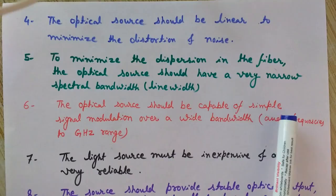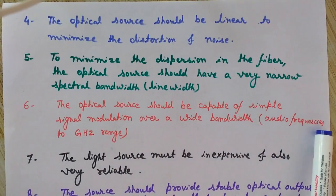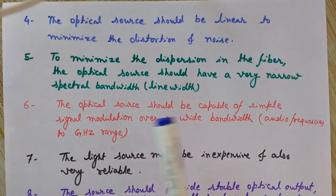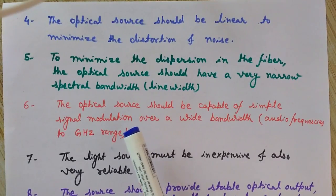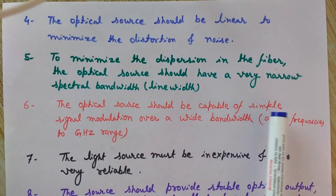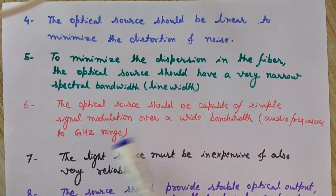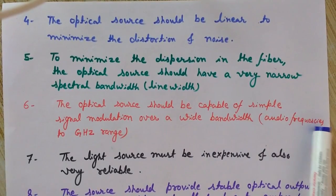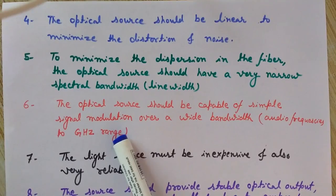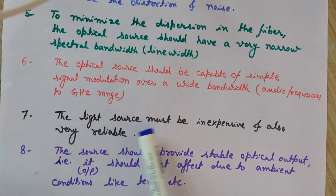The sixth property: the optical source should be capable of simple signal modulation over a wide bandwidth, ranging from audio frequencies to the gigahertz range. This modulation capability is desirable because we need to modulate the signal for transmission.